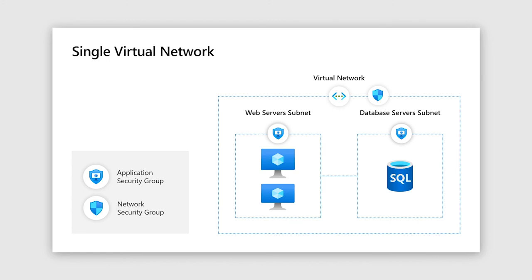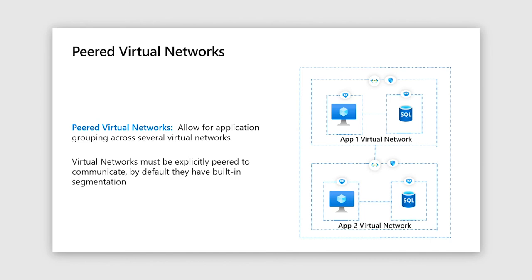The single virtual network pattern is great at segmenting at a single virtual network level; however, it serves more as a building block than a complete solution. It works when the network size is small and within a single Azure region. The next solution is peered virtual networks, which takes the single virtual network building block and creates a network pattern that is multi-region and larger in size. The single virtual network introduces segmentation within a virtual network, while peered virtual networks introduces segmentation principles between several virtual networks.